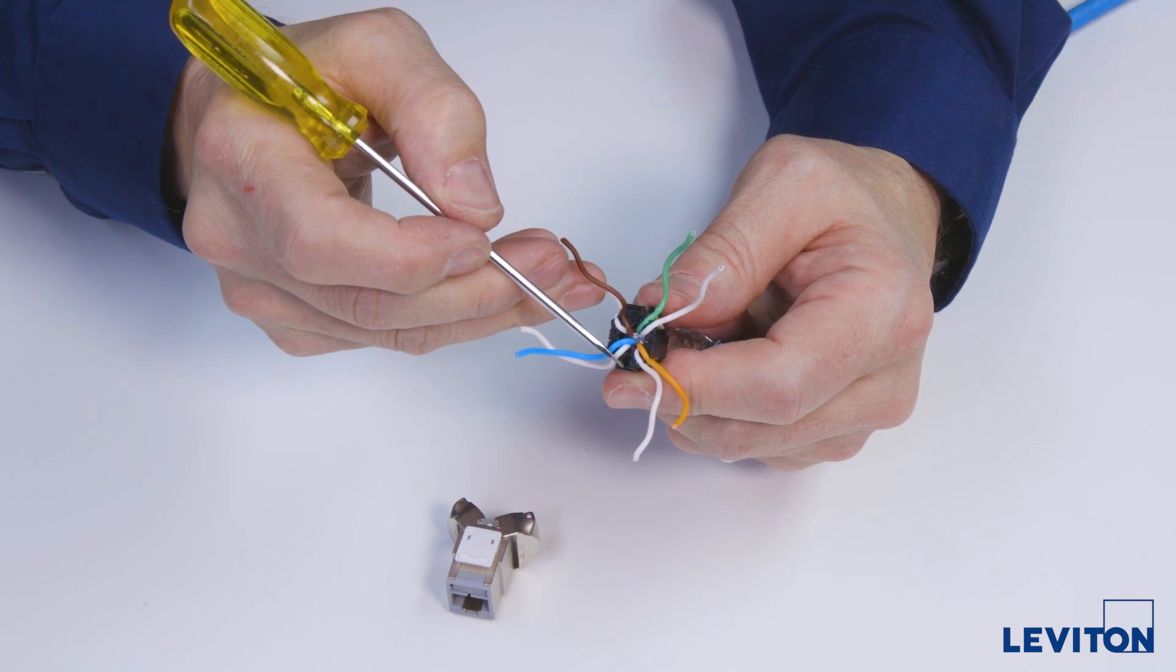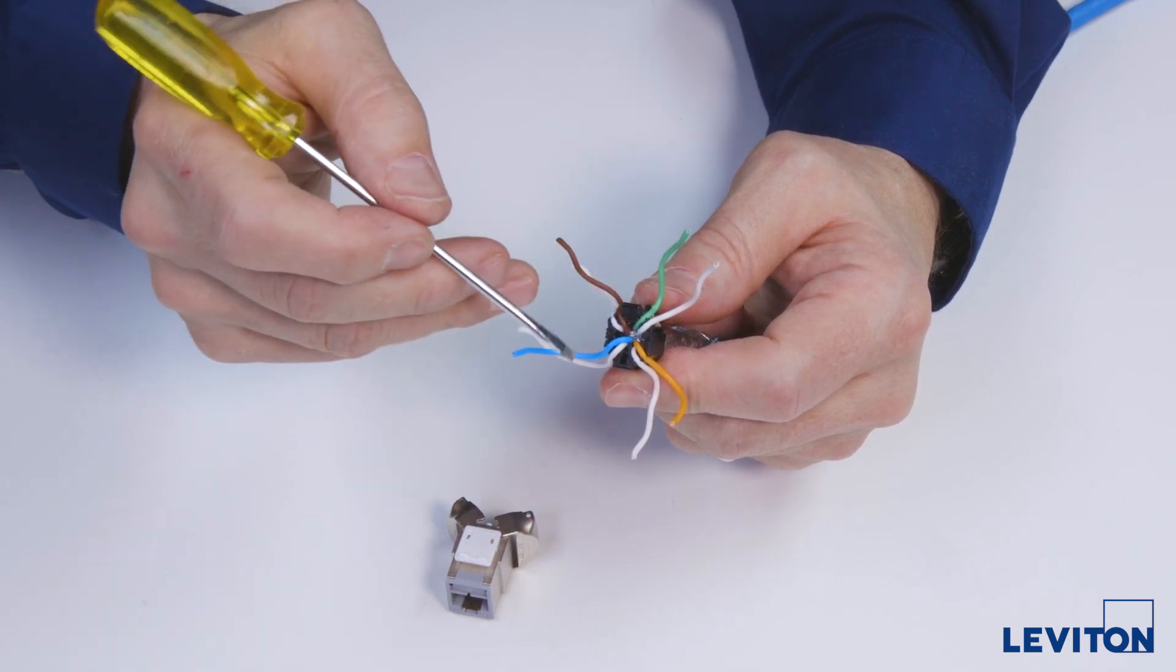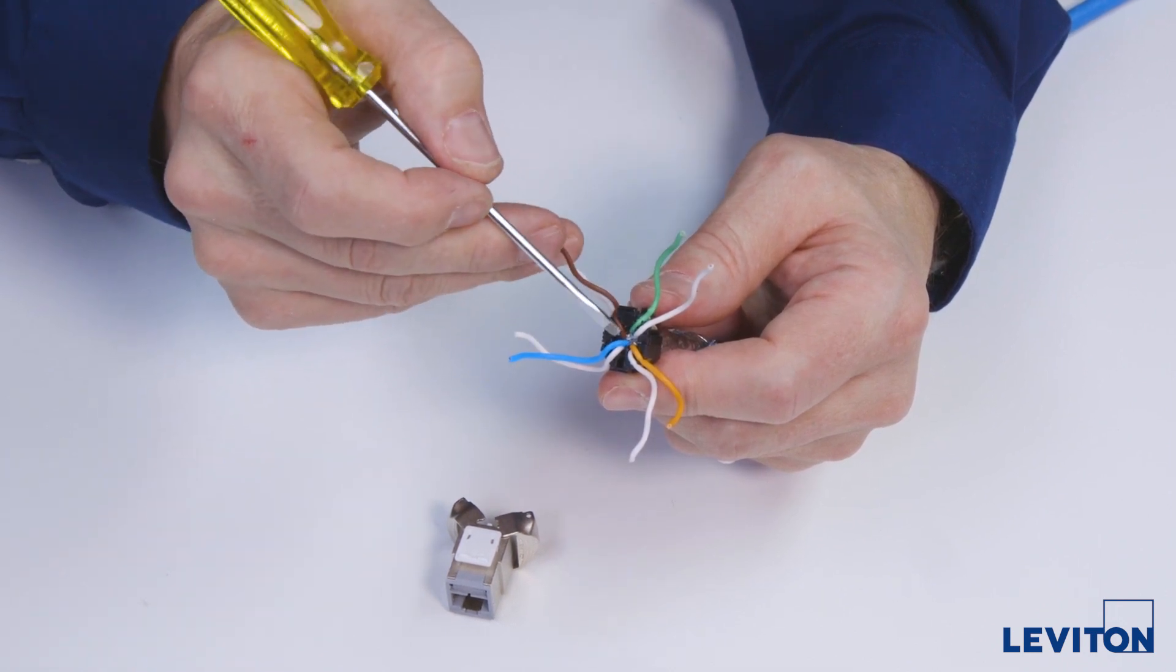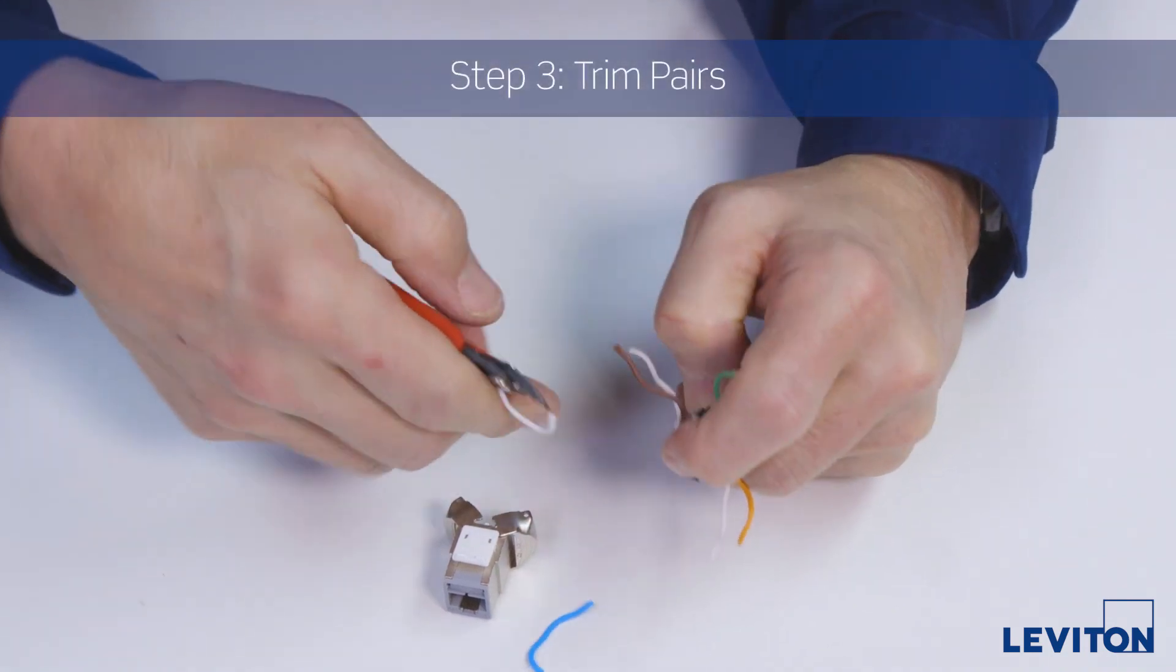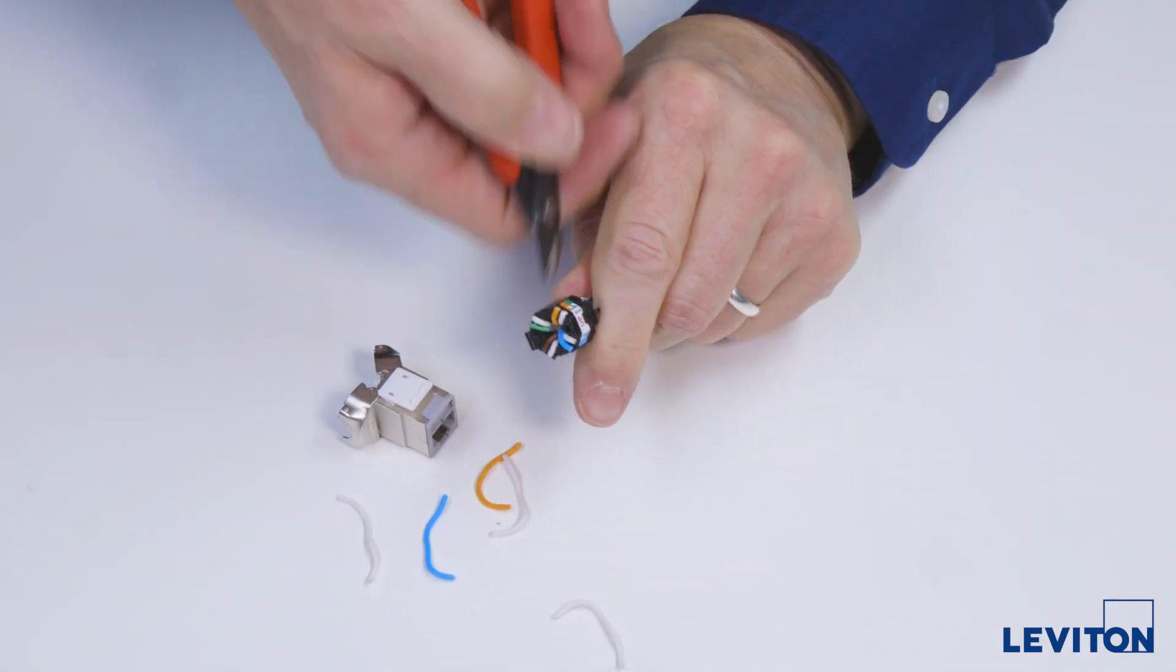Do a quick polarity check. Observe this guide pin hole. If the connector is wired correctly, the white wire from each pair will be closest to the guide pin hole. Using flush cutters, trim all pairs so they are flush with the sides of the wire manager.